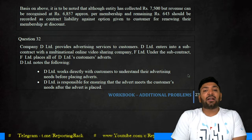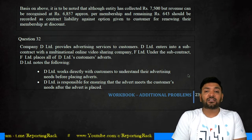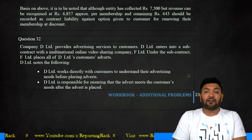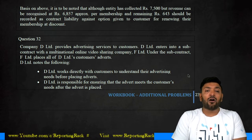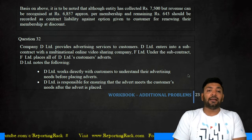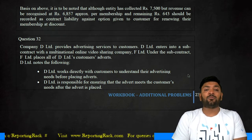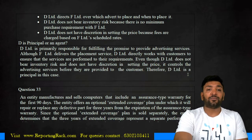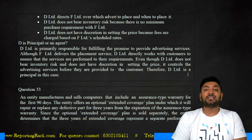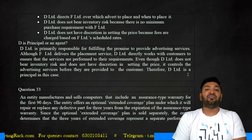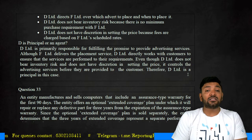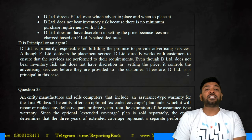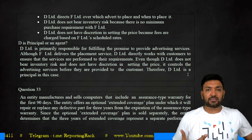Next question: D Limited provides advertisement services to customers. D enters into a subcontract with a multinational online video-sharing company, F Limited, under which F places all the advertisements for D's customers. Key facts: D works directly with customers to understand their advertising needs and is responsible for ensuring the advertisement meets customer needs. D directs F Limited over which advertisement to place and when. D does not bear inventory risk, there is no minimum purchase requirement with F, and D does not have discretion in setting prices as fees are based on F's schedule rates. Is D a principal or an agent?